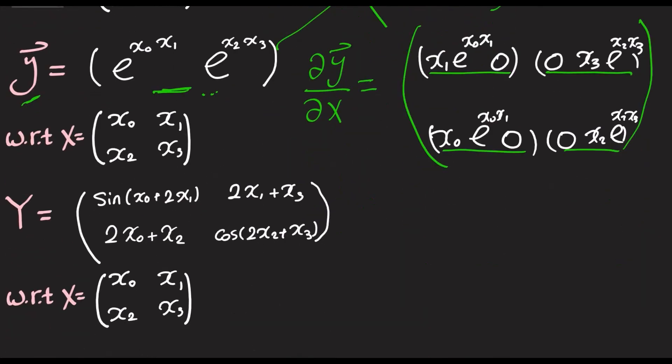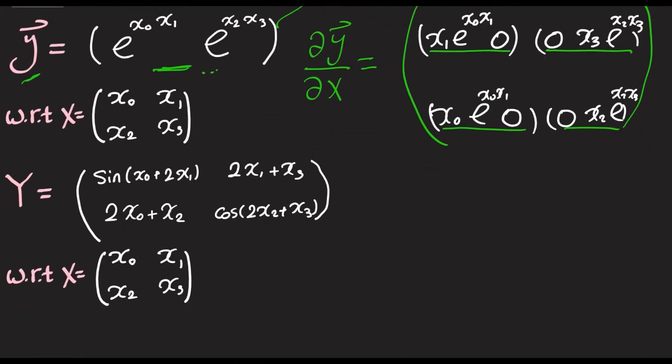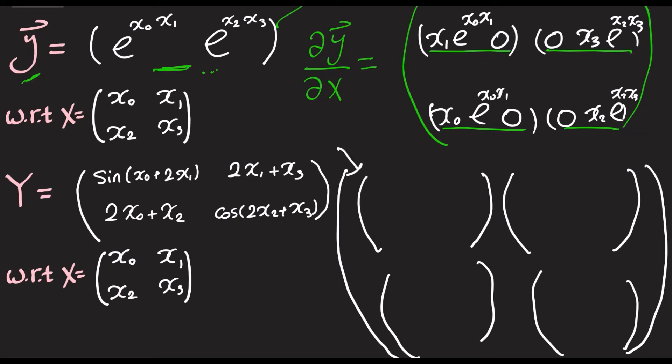So, this is the same, but this time, differentiating a matrix with respect to a matrix. So, it will be the same Kronecker product. This time, we need some very large space, actually, with four small matrices. Okay, so, here, differentiate with respect to x0. So, basically, cosine of x0 plus 2x1, 0, 2, and 0.